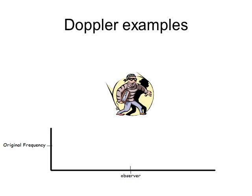An example: imagine a robber hiding from the cops and a police car driving by with its sirens on. As the police car drives toward the robber, the siren has a higher pitch, and as it passes, the pitch drops to lower. This is the Doppler effect — the frequency the observer (the criminal) heard was too high or too low compared to what the source was actually producing.